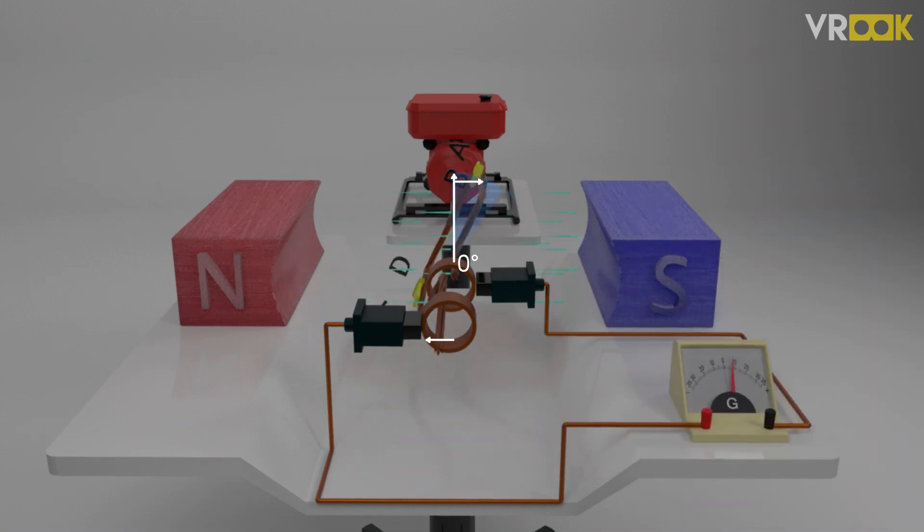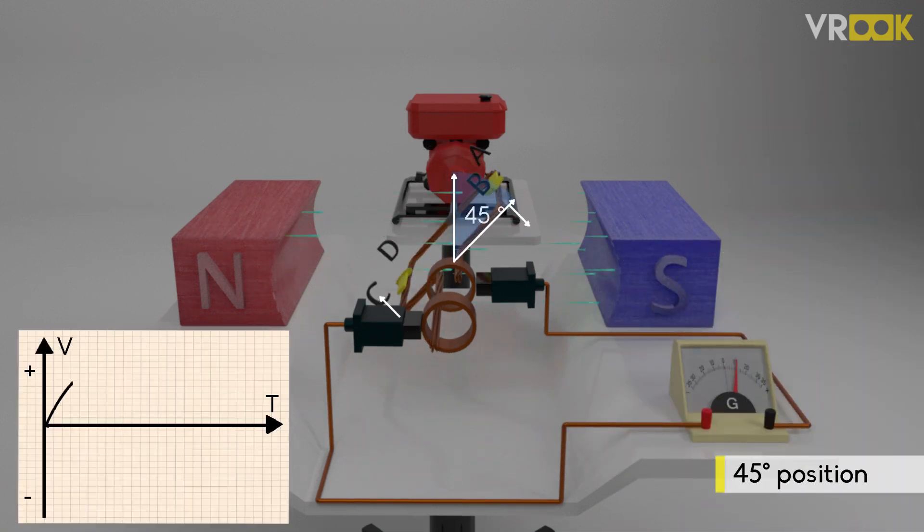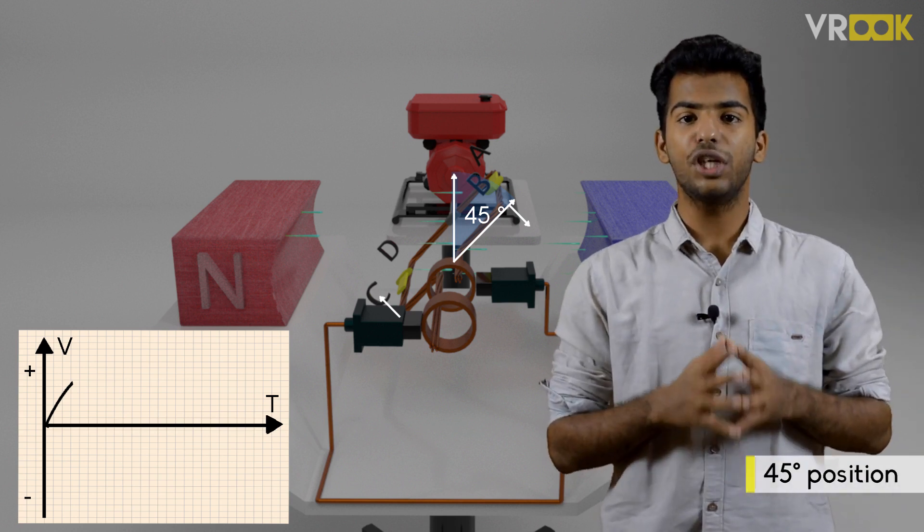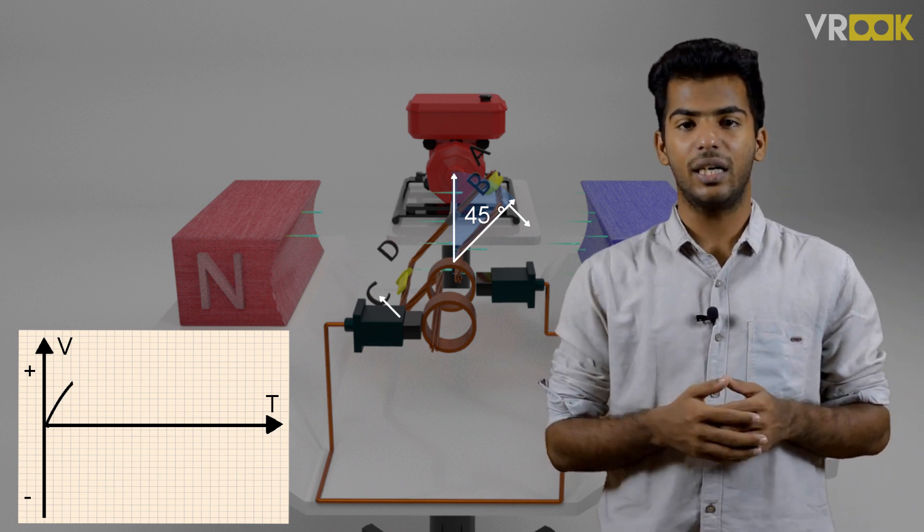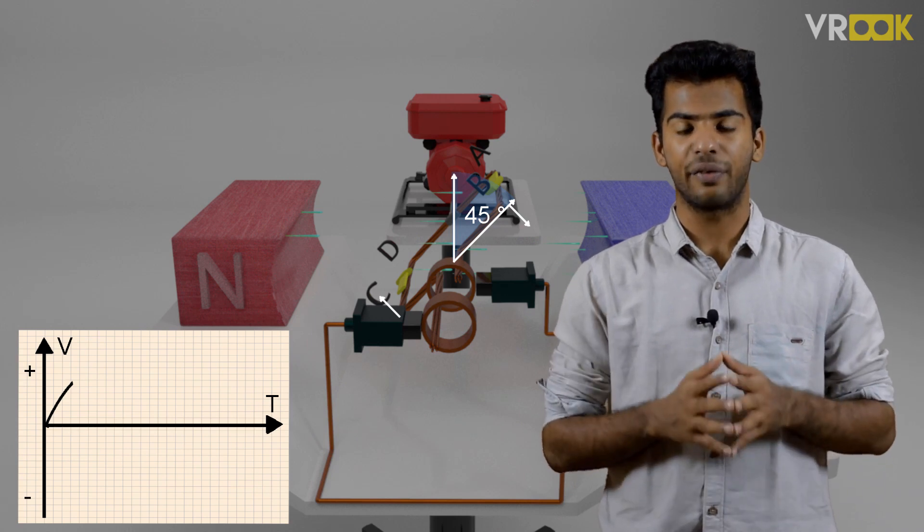If we move slightly ahead, say about 45 degrees, the velocity components will be cutting or linking with magnetic field as we can see. By that, we get a small amount of EMF. Here, 45 degree is measured between the plane of the conductor and the magnetic field.